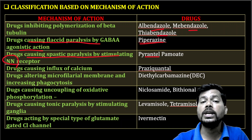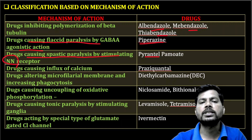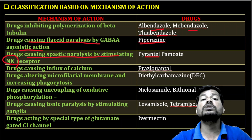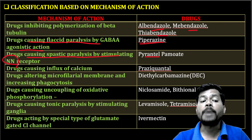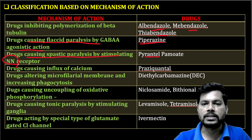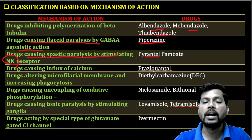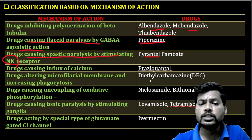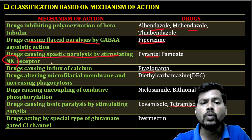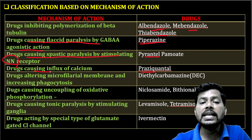Next, pyrantel pamoate causes spastic paralysis by stimulating nicotinic receptors — specifically it stimulates the NM receptor continuously. Continuous stimulation leads to spastic paralysis of the worm.